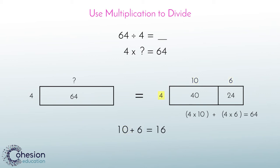4 going into 40 10 times and 24 6 times is the same thing as saying 4 will go into 64 16 times. It's just presented in a much easier way to calculate. Again, the goal is to take a large number like 64 and turn it into two smaller numbers that are divisible by 4.